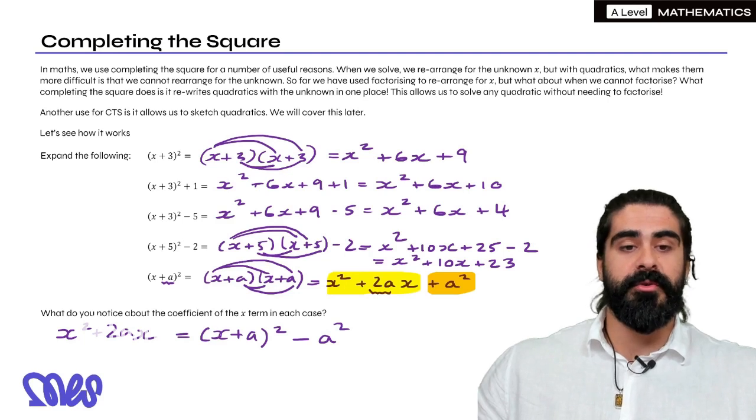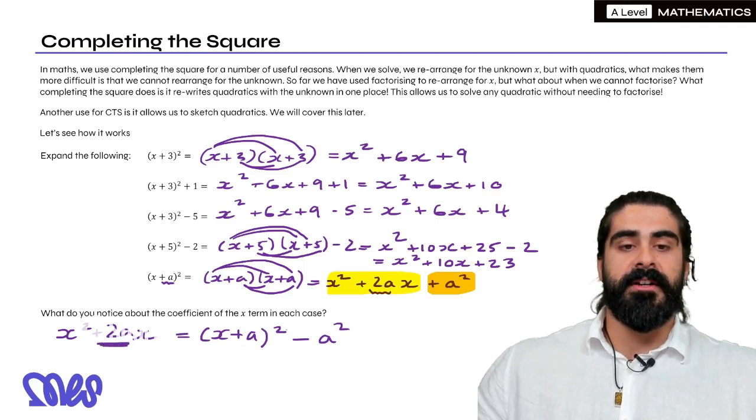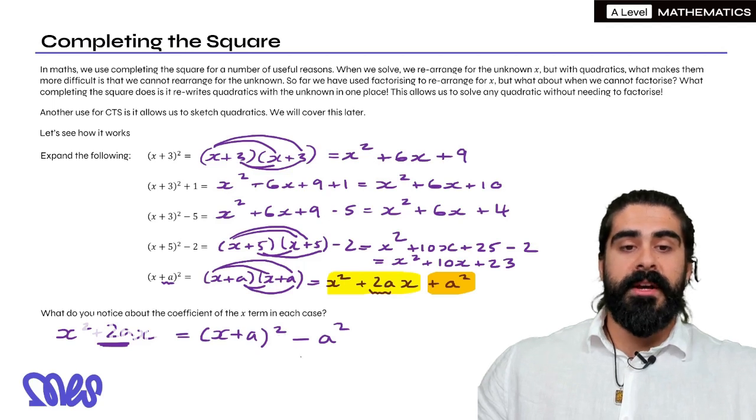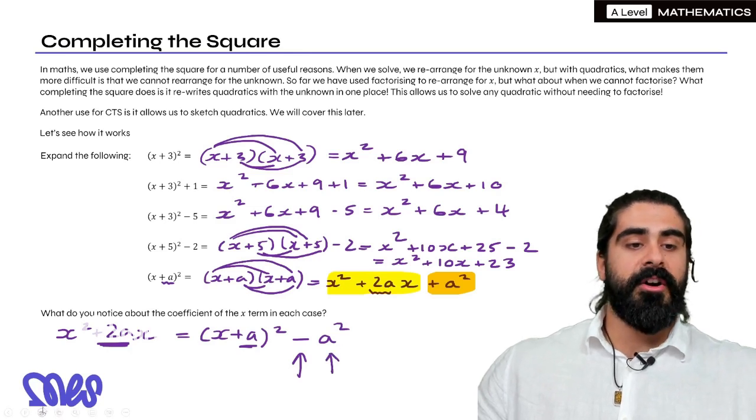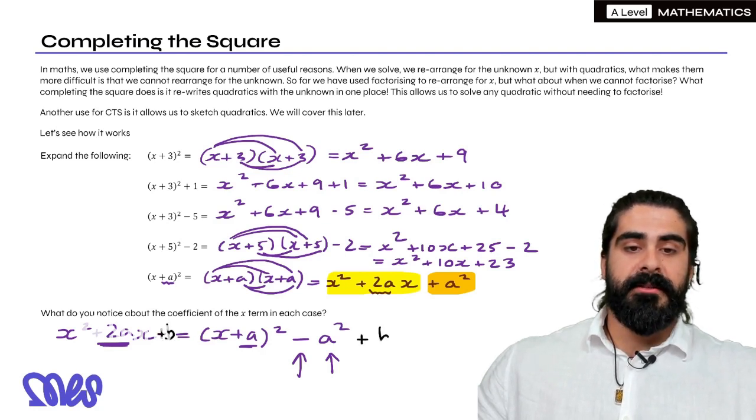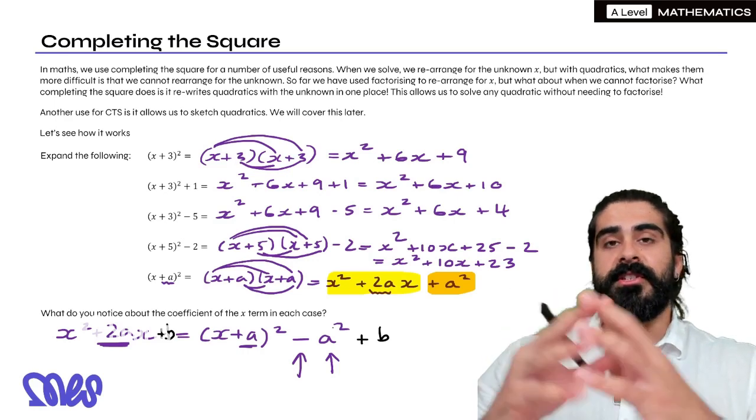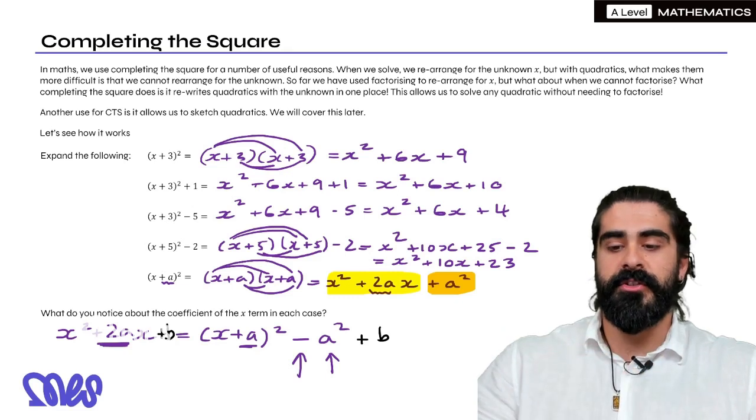To complete the square, all you do is when you are introduced to a quadratic, you introduce a bracket, and you half the coefficient of X, and then you write squared. Then you always subtract the number in the bracket squared. Then you might ask, what happens if you have a number at the end? If I just have a number at the end plus B, then you just add B to both sides. So that number at the end just carries over to the other side. So it's a really easy skill, we just need to practice a few questions.